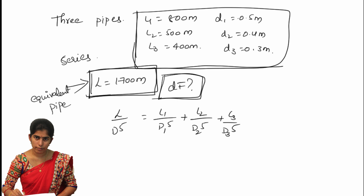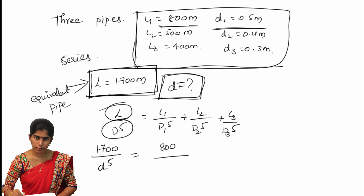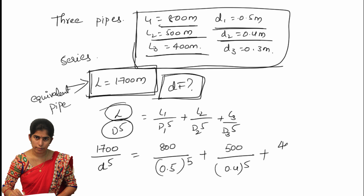This is the equation — the derivation we have already seen. L is the length of the equivalent pipe, given as 1700 meters. The diameter is unknown, so we write D to the power 5 equals 800 over 0.5 to the power 5, plus 500 over 0.4 to the power 5, plus 400 over 0.3 to the power 5.